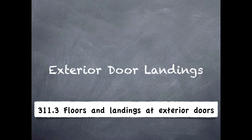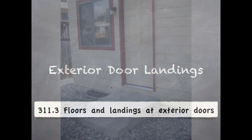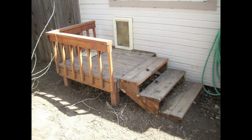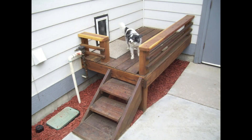Let's go into exterior door landings — we're going to talk about all landings for all doors. There shall be a landing or floor on both the exterior and interior side of every exterior door. That means the one required egress door and any of the other doors. It's every single door from the house. You've got to have these mandated landings for all the occupants of the house to have a safe way to get out.